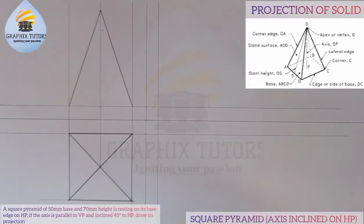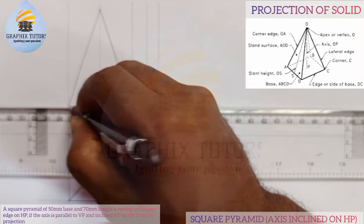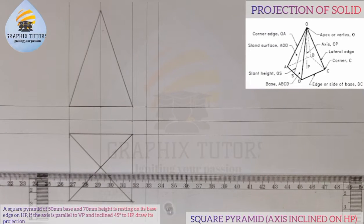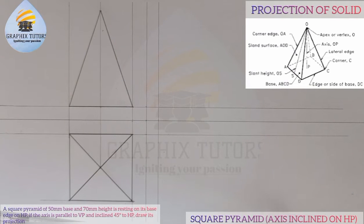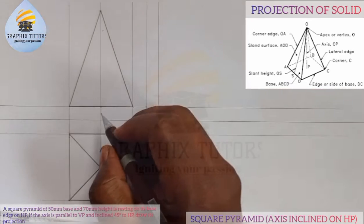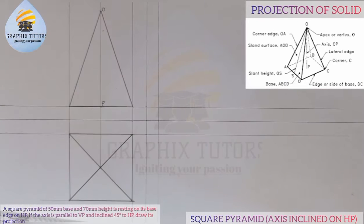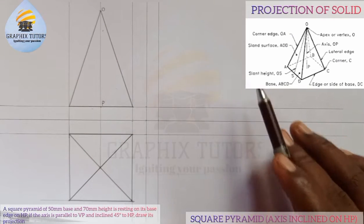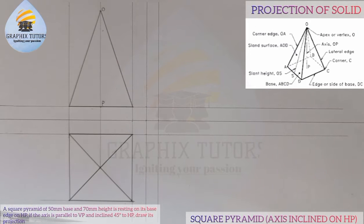You can see what we have here — this is telling you how the pyramid looks. This side is the axis, which I can label as point P at the base, and the top as O. We are told that this pyramid is tilted at an angle of 45 degrees to the HP.